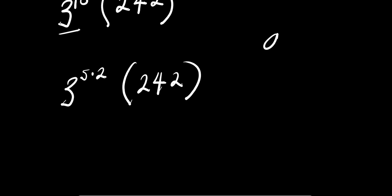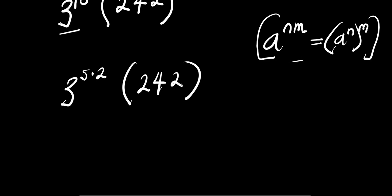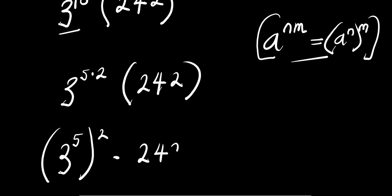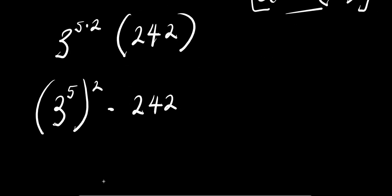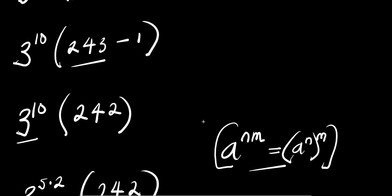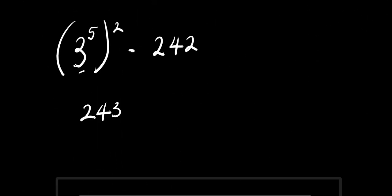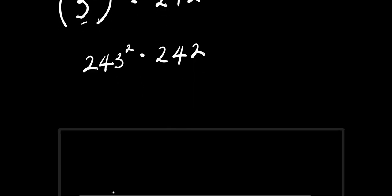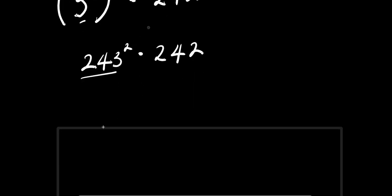Now, if you have 3 to the power of 10 times n, this equals 3 to the power of 10. Applying this right here, I have 3 to the power of 10 times 242. So from here, 3 to the power of 5 is 243, and this is raised to 3 to the power of 2 times 242.